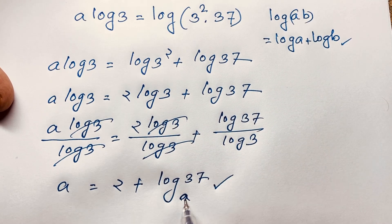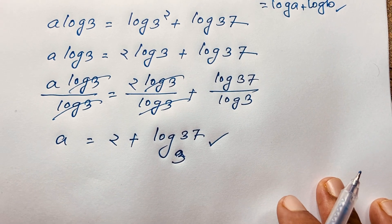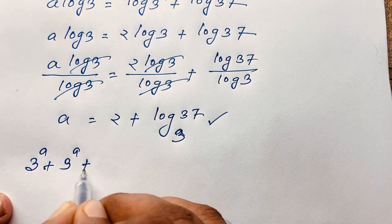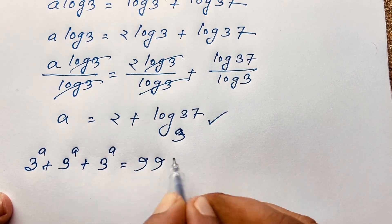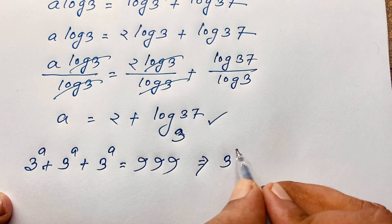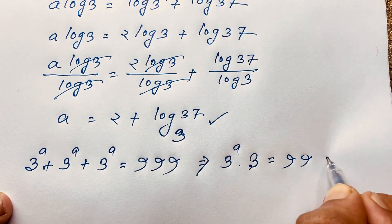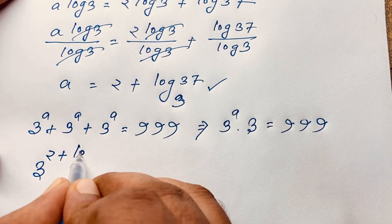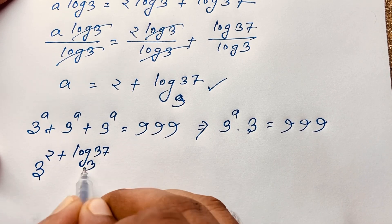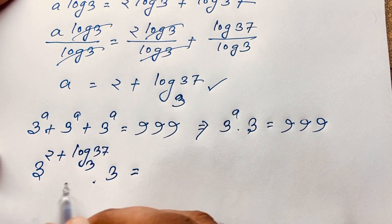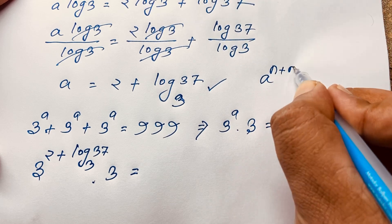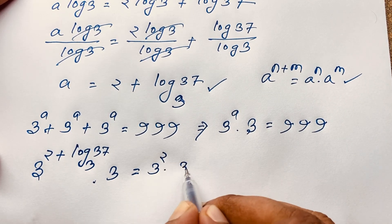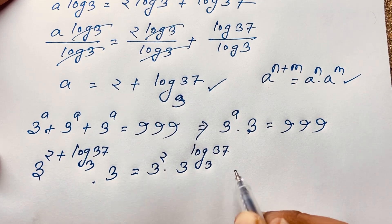Let's verify our question: 3 to the power a plus 3 to the power a plus 3 to the power a equals 999. This simplifies to 3 to the power a times 3 equals 999. Substituting a equals 2 plus log 37 base 3, and applying the exponent rule a to the power (n+m) equals a to the power n times a to the power m, we get 3 to the power 2 times 3 to the power (log 37 base 3) times 3.